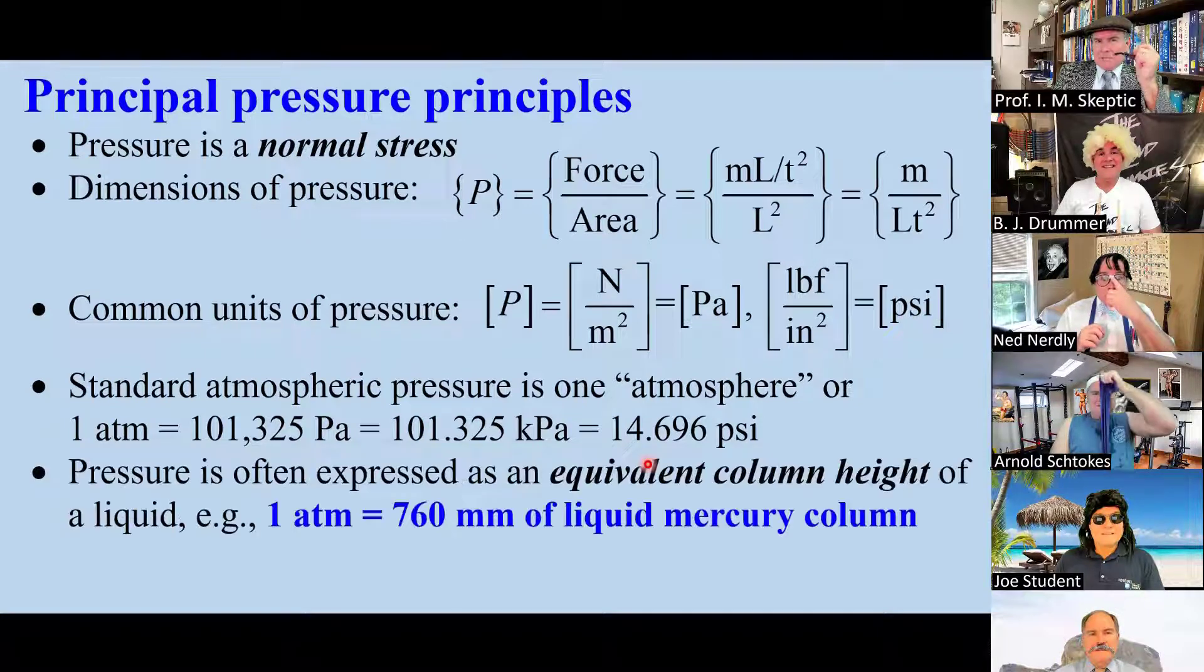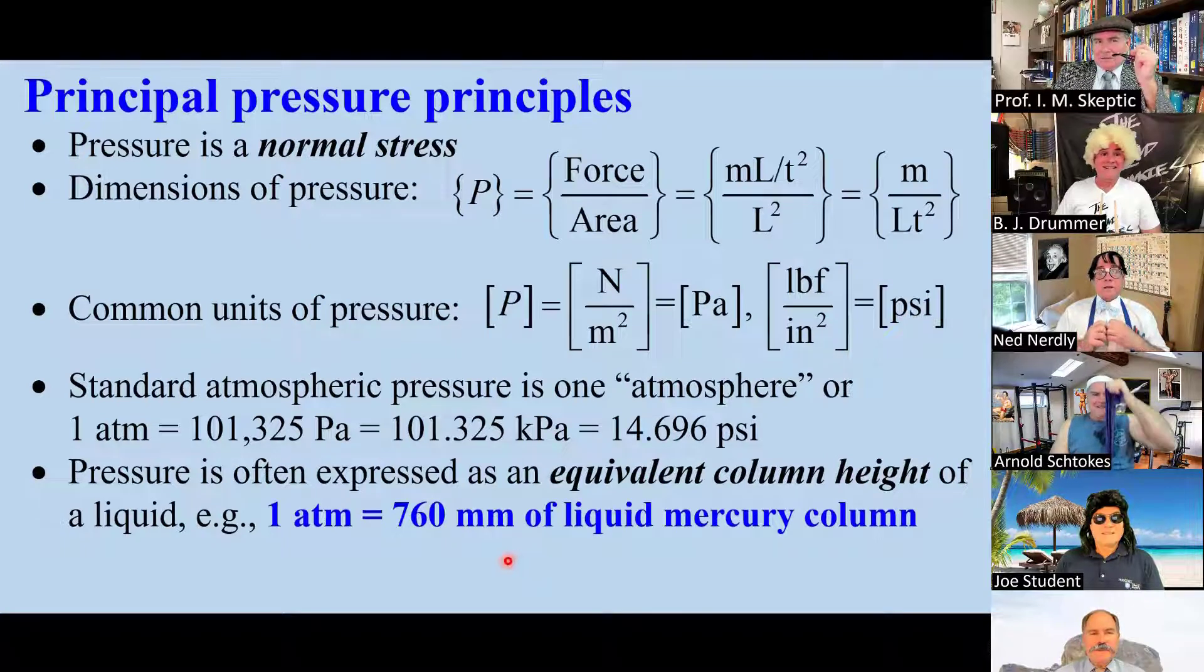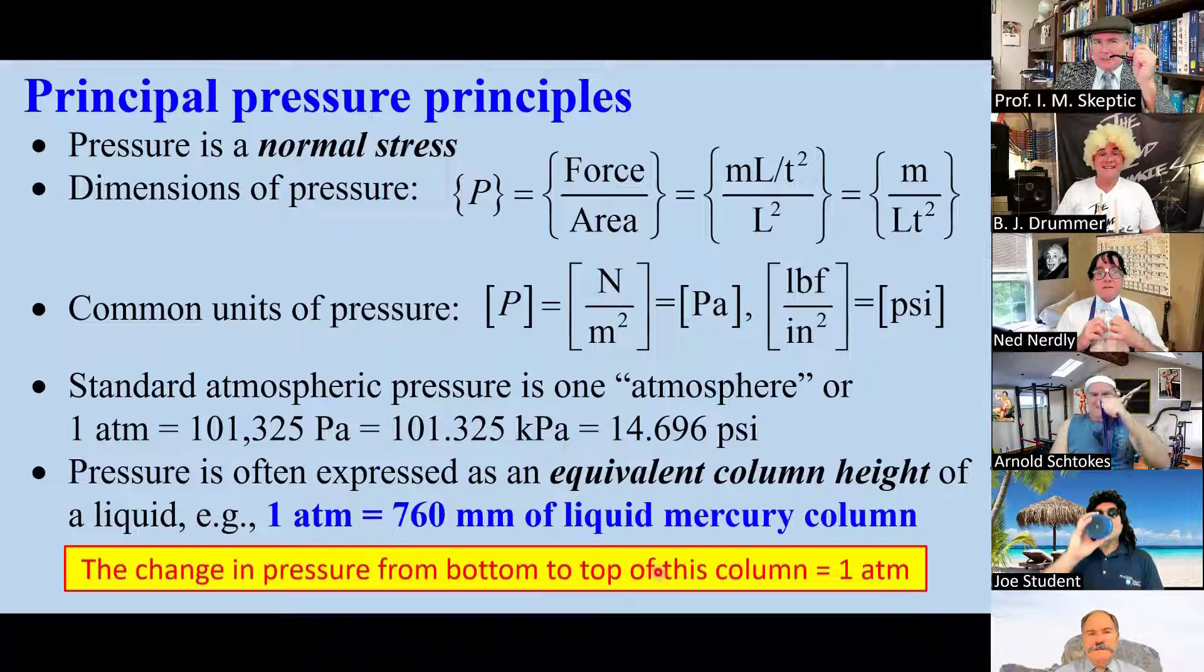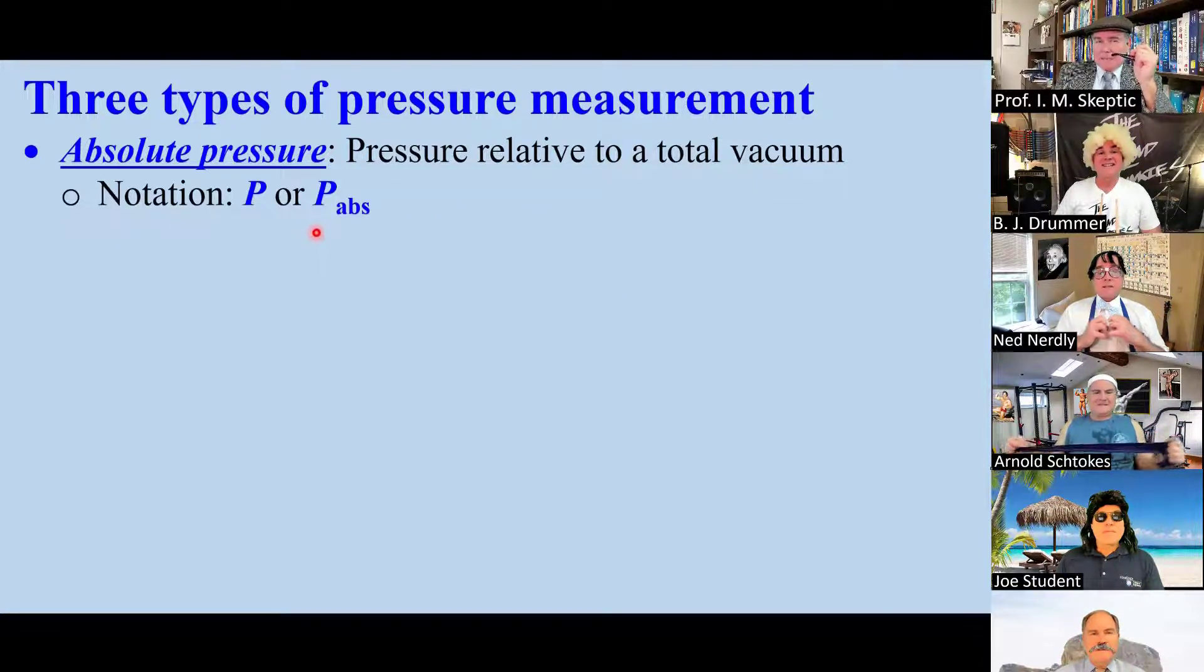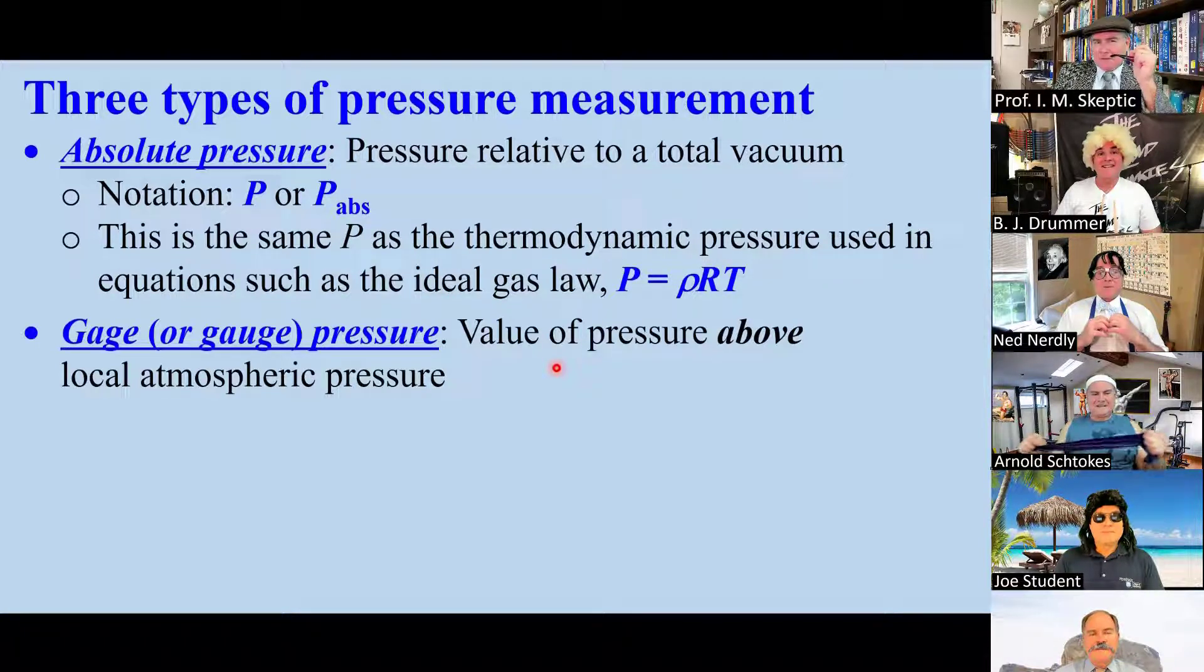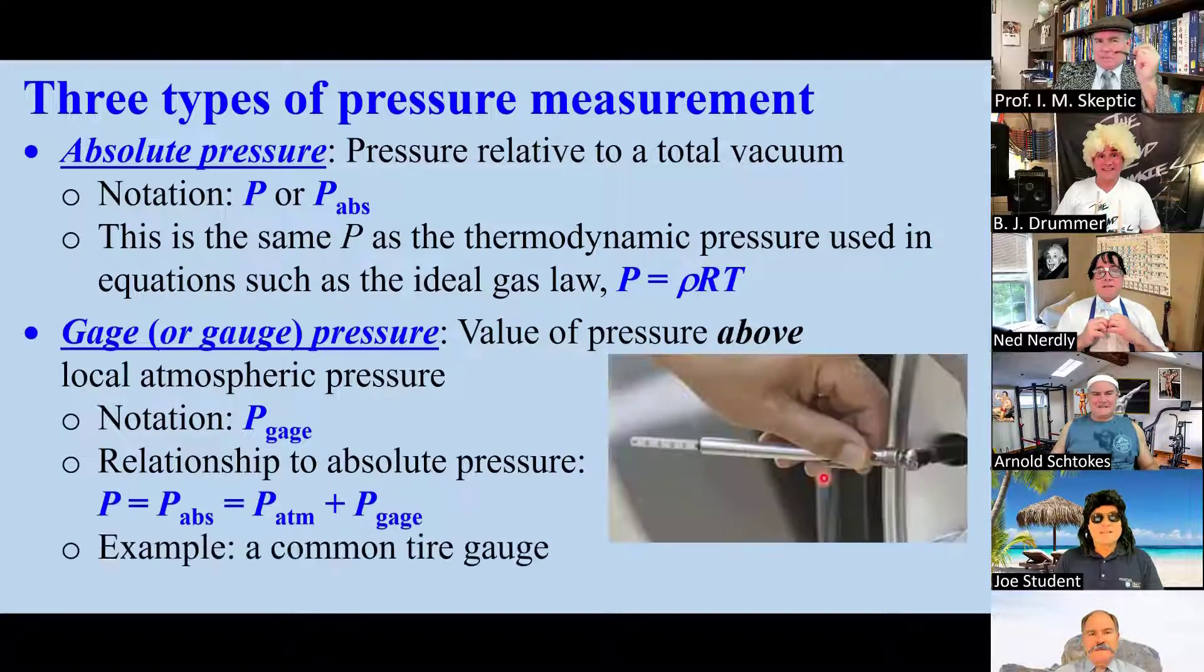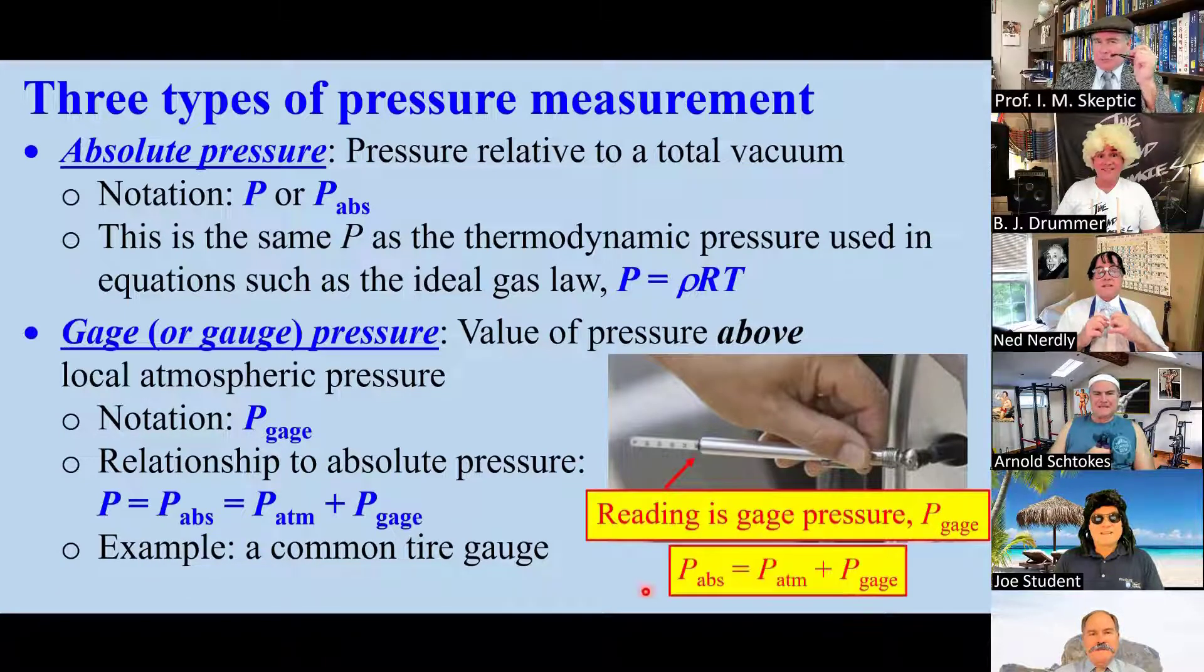A standard atmosphere is about 101.3 kPa, or about 14.7 psi. The pressure is often expressed as an equivalent column height of a liquid. 760 millimeters of mercury is one atmosphere. This means that the change in pressure from top to bottom of the liquid column is one atmosphere. There are three common types of pressure measurement. Absolute pressure is pressure relative to a total vacuum. We call it P or P-abs. This is the same P you're used to using in thermodynamics. Gauge pressure is the value of pressure above local atmospheric pressure. The notation is P-gauge. P-absolute is P-atmosphere plus P-gauge. This is what you read with a tire gauge, for example.